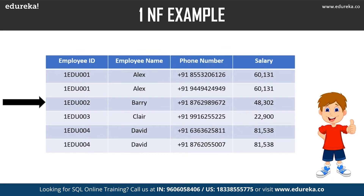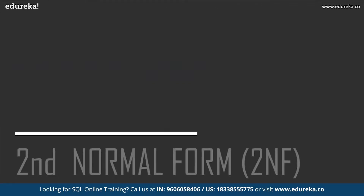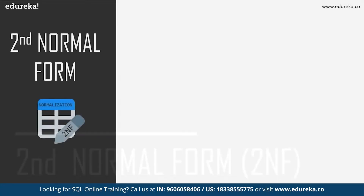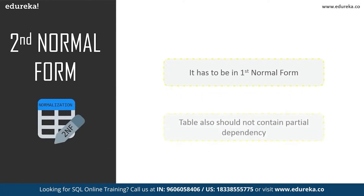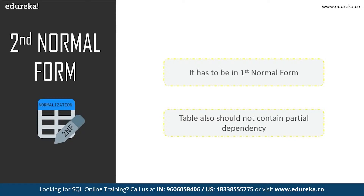First normal form is simple and can be easily identified in the table — there are no multiple values in any column, so first normal form is achieved. Now let's move to second normal form. Second normal form was originally defined by E.F. Codd in 1971. A table is in second normal form only when it fulfills two conditions: it has to be in first normal form, and the table should not contain partial dependency.